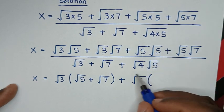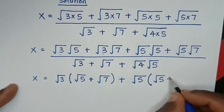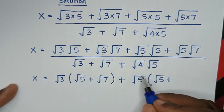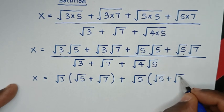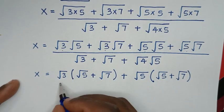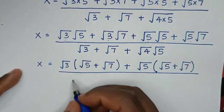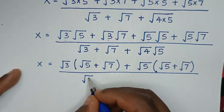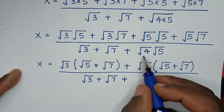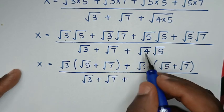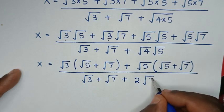This divided by √5 is √5. Plus this divided by √5 is √7 in bracket. Then over √3 + √7 + 2, times √5.